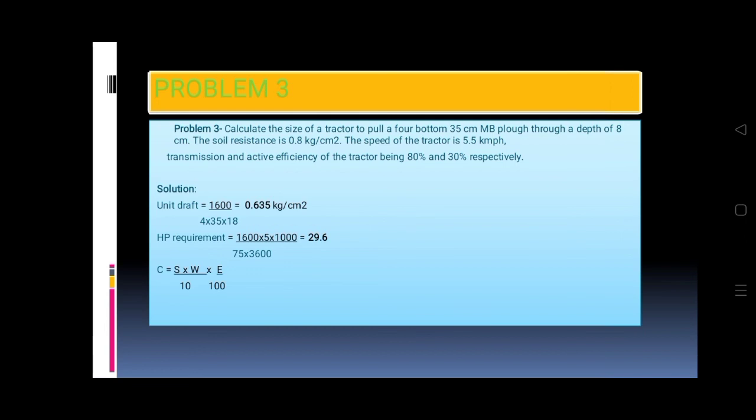HP requirement equals 1,600 times 5 times 1,000 divided by 75 times 3,600 equals 29.6. C equals S times W divided by 10 times E divided by 100.